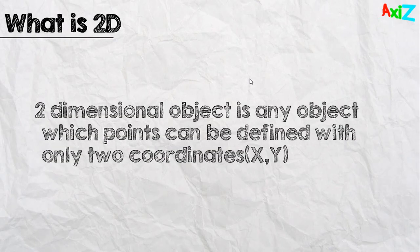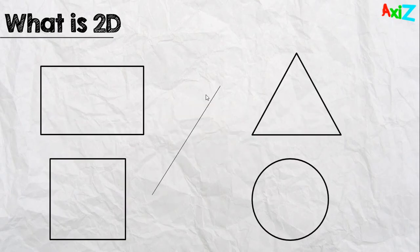Now, let me tell you more about two-dimensional object. Two-dimensional object is any object which points can be defined with only two coordinates X and Y. Now, here are some examples. We've all seen this in school. Like rectangular, square, line, circle and triangle.